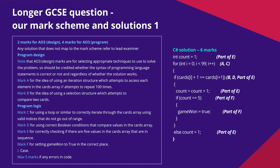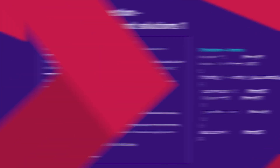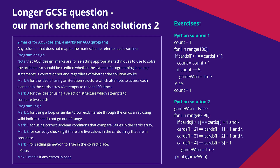Some of the mark points, such as mark point D, which is for having a correct condition to compare two card values in the array, can be clearly mapped to a single line of code in solutions. Others, such as mark point F, which is for setting 'game one' to true in the correct place, require a number of lines of code to be awarded. The example solution in C-sharp is fully correct, with label mark points to the side showing where each mark was awarded. Mark E is the most complex to award, as numerous elements of the code are required to check if the five cards are in sequence. Two other solutions written in Python are now shown — one fully correct and one partially correct — which you can try marking against the mark scheme.